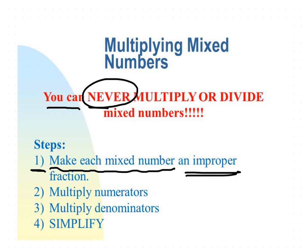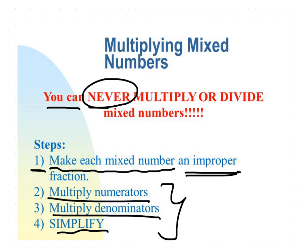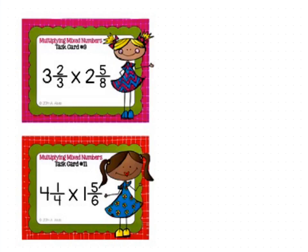The first step is: you have to convert each mixed number into an improper fraction. That is the secret. First convert to improper fraction, then do your multiplying as usual — multiply the numerators and multiply the denominators — and then of course simplify the final answer. This converting step is the only new step added.